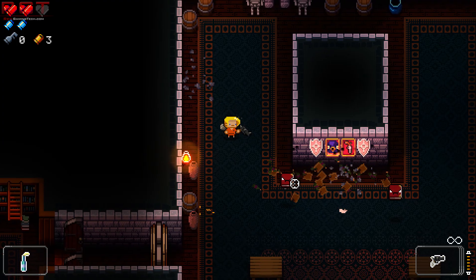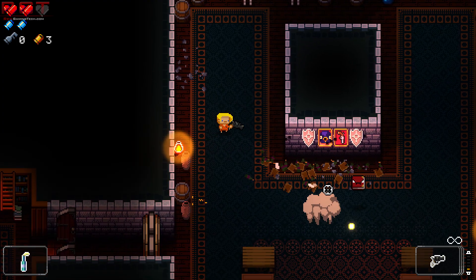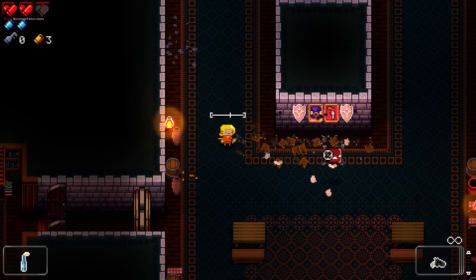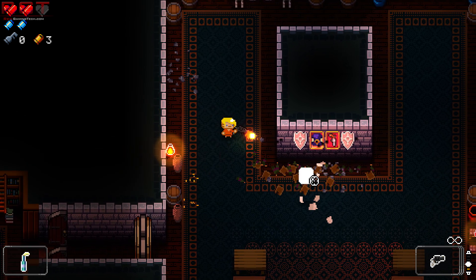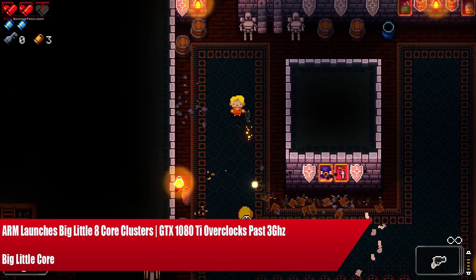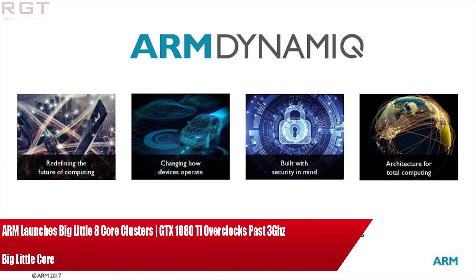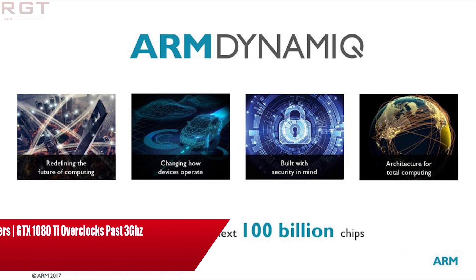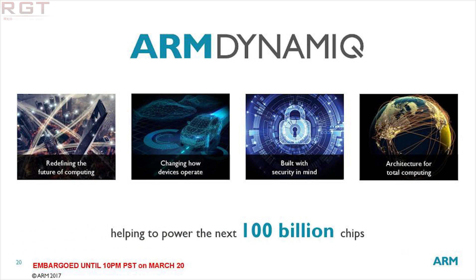Ladies and gentlemen, my name is Paul and in this Shrigim2.com video we're going to be discussing the ARM DynamIQ architecture — big.LITTLE taken to the absolute extreme — as well as touching on the GTX 1080 Ti overclocking, where it has hit a pretty impressive record of 3 GHz. But we'll get into that last.